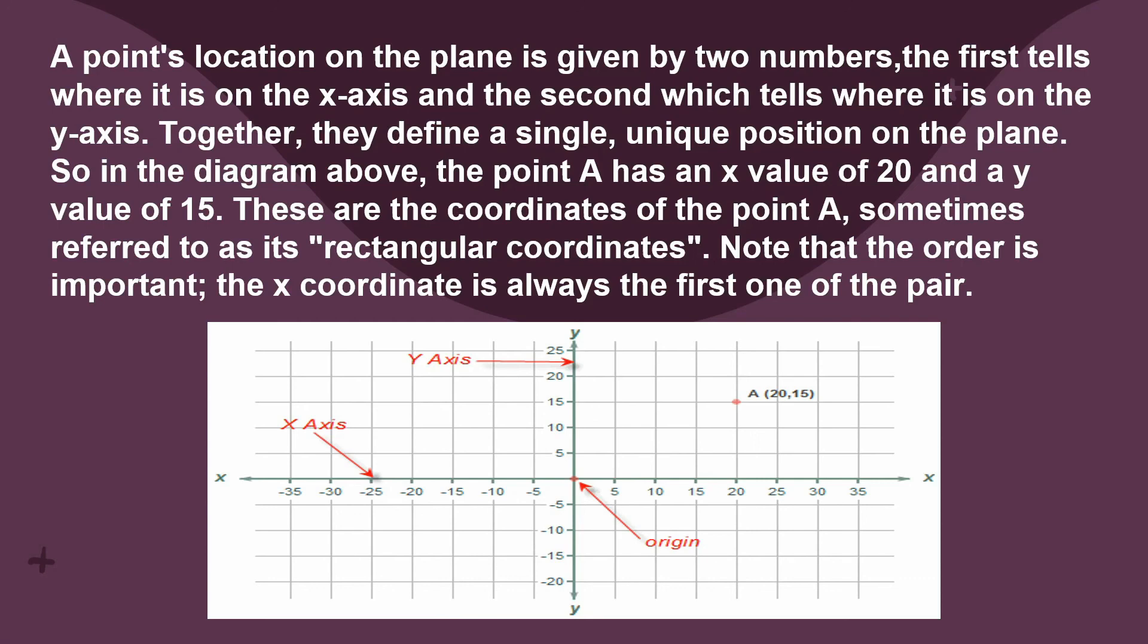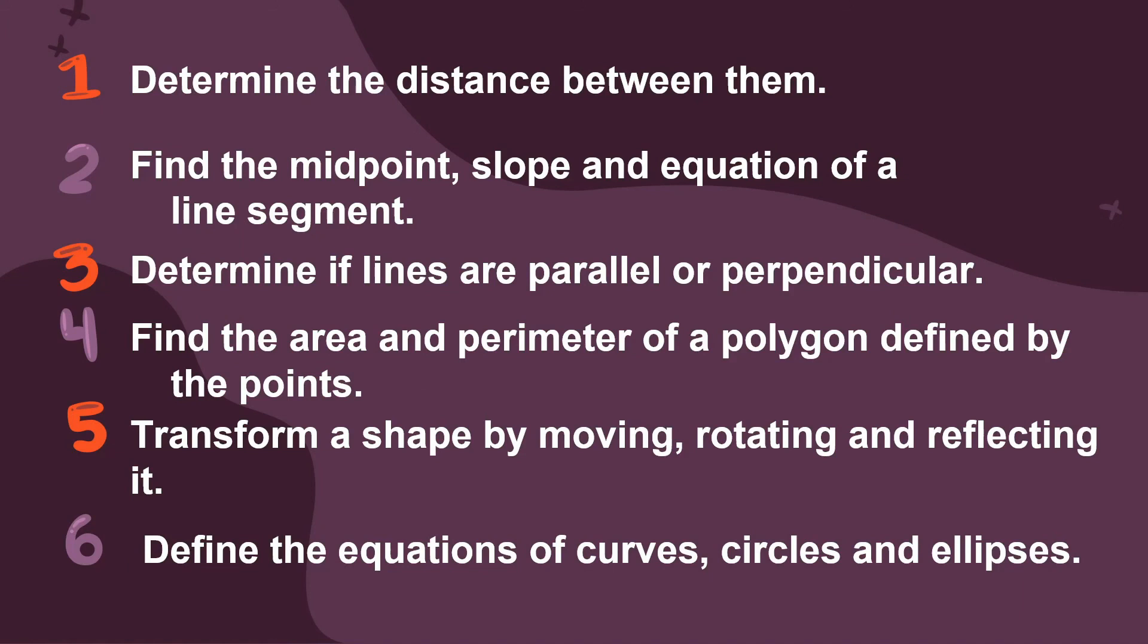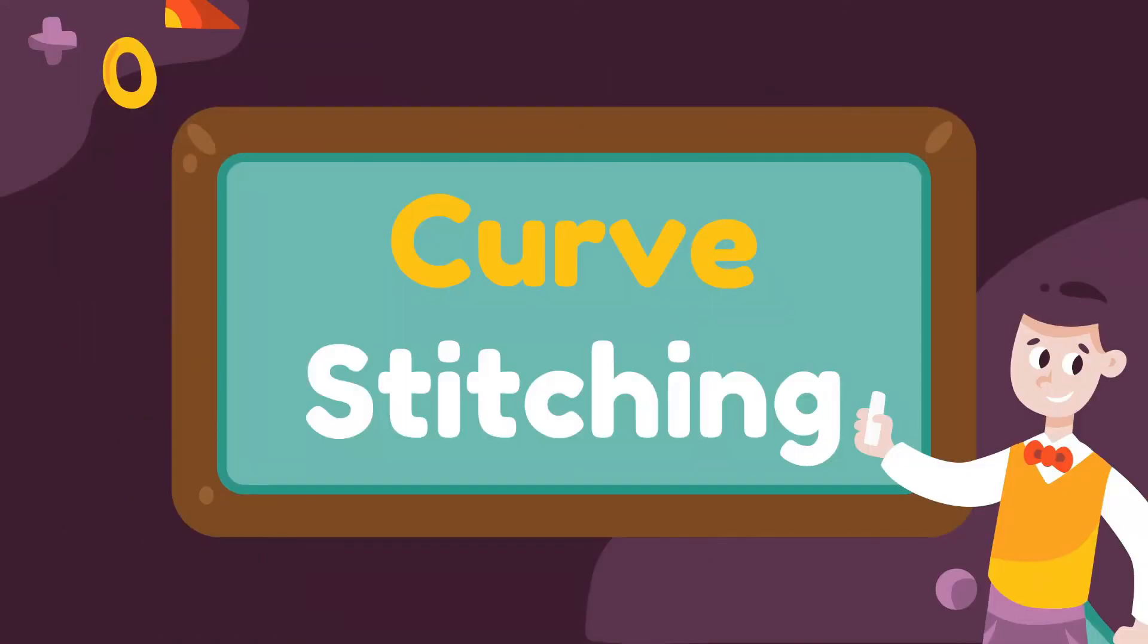Together, they define a single unique position on the plane. In the diagram, the point A has an X value of 20 and a Y value of 15. These are the coordinates of the point A, sometimes referred to as its rectangular coordinates. Things you can do in coordinate geometry: first is determine the distance between them, second find the midpoint, slope and equation of the line segment, third is determine if lines are parallel or perpendicular, fourth is find the area and perimeter of a polygon defined by the points, fifth is transform a shape by moving, rotating, and reflecting it, lastly define the equations of curves, circles, and ellipses.